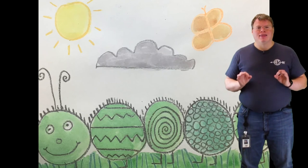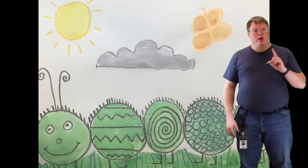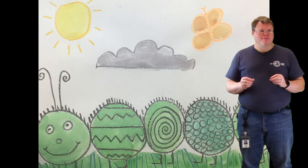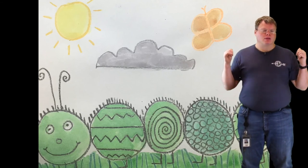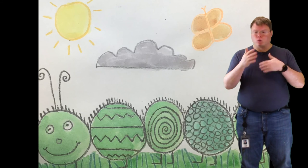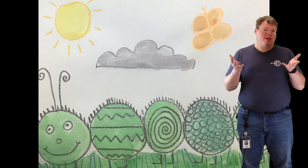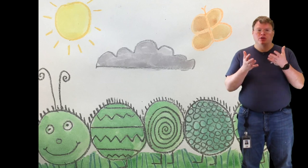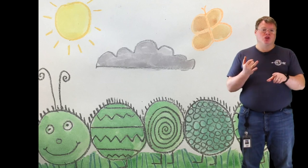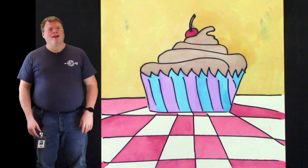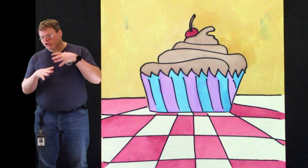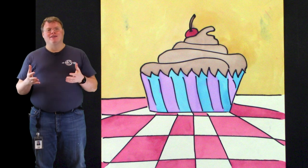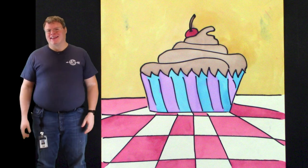We learned a lot in this lesson. We talked about texture — that's how things feel when you touch them. We learned about the background and making sure that your caterpillars or whatever you draw aren't just floating in a big white nothing. We also continued to learn about building a picture using simple lines, simple shapes, and patterns. In our next lesson, we're going to continue putting all of those ideas together and create some pictures of cupcakes. I can't wait to see you then.